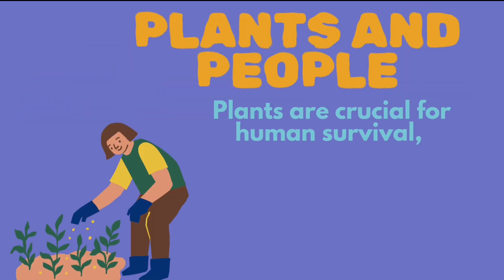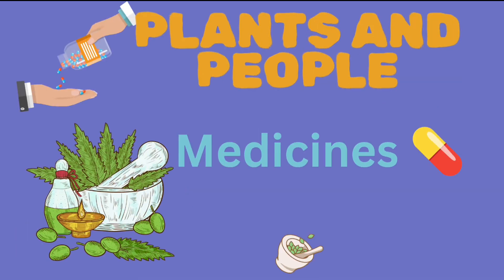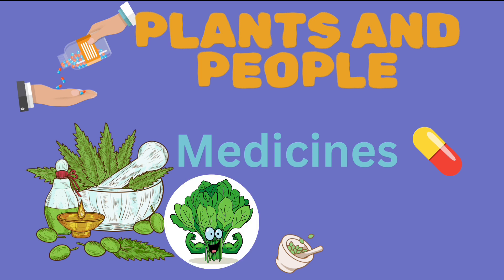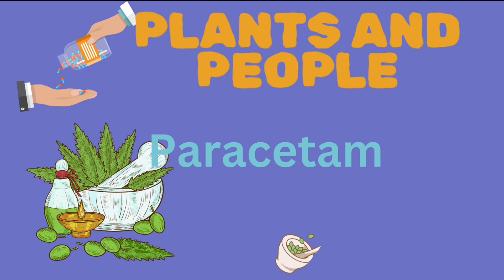Plants are crucial for human survival — without plants there would be no food. Plants provide us medicines. For example, spinach is rich in iron and fiber, low in fats and cholesterol, and is good for weight control, eyes, wounds, and blood pressure. Ginger can boost digestion and support our immune system. Paracetamol tablets are also obtained from plants.